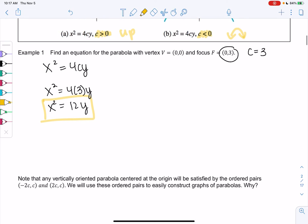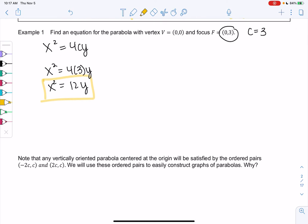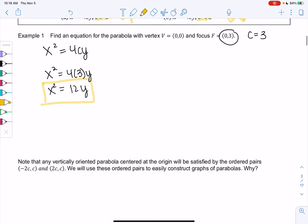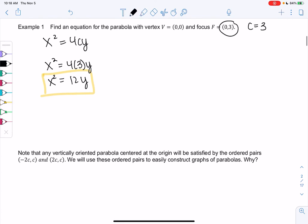Look at the note. We have any vertically oriented parabola. Vertically oriented just means it goes up or down, not sideways. We'll always satisfy the ordered pairs (-2c, c) and (2c, c). Why is this true? Let's check that it's true. x squared equals 4cy. So let's plug in these points. Negative 2c for x squared equals 4c times c for y.